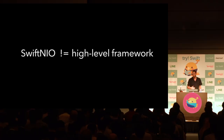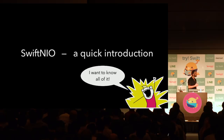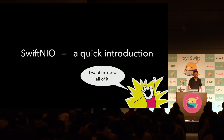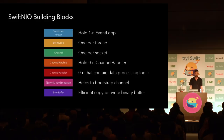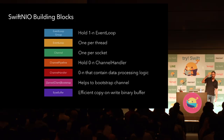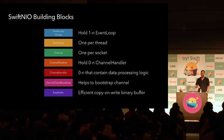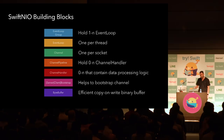Most normal users would probably not use SwiftNIO directly but would use a framework built on top of it. Let me give a quick introduction to the core building blocks. We have an EventLoopGroup, which holds multiple EventLoops. You can think of an EventLoopGroup like a thread pool, and an EventLoop like a thread. Each EventLoop is tied to one thread that never changes, meaning all event handling is done single-threaded — I'll explain why this is important shortly.